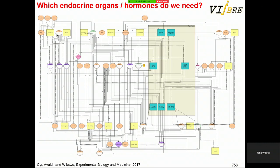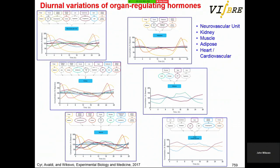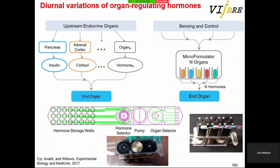There is significant hormonal variation in each of these organs, and they're all quite different — and this can now be replicated in vitro. Upstream endocrine organs on the left show the biology; on the right is what we can do, and at the bottom is the gadget we're building to do this modulation.